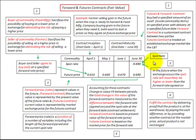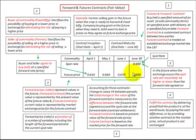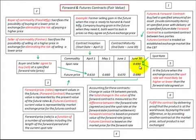In the future when this exchange occurs, the spot rate will most likely be either higher or lower than the forward rate agreed on. Looking at it in terms of our seller, the farmer, he would have had a loss because he gave up something of greater value than what he received — he could have received $0.69 a pound but only received $0.61 a pound. In the case of our buyer, the cereal manufacturer, he had a gain because he received something worth $0.69 a pound when he only had to pay $0.61 a pound.